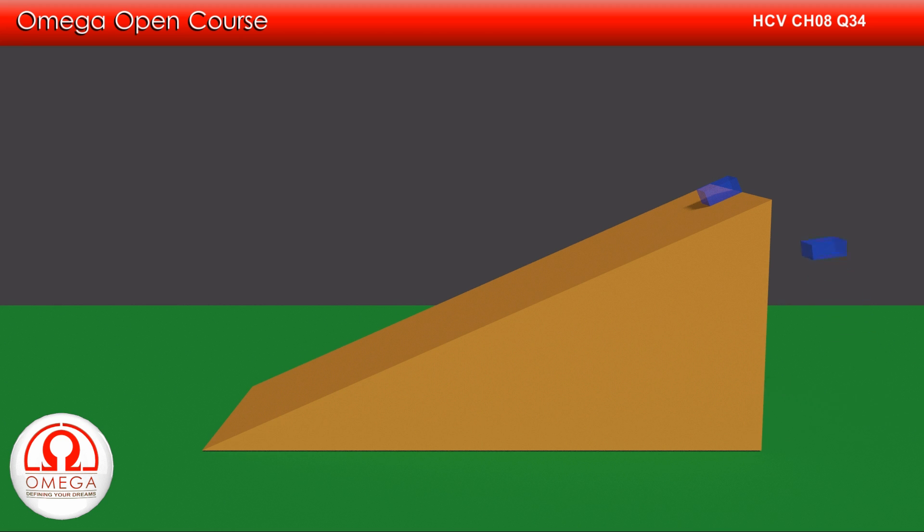When the block is lifted and put on the top of the incline at height h from the ground, its gravitational potential energy is mgh. As it is at rest, its kinetic energy is still zero. So the total increase in the mechanical energy of the system is mgh. Therefore, work equal to mgh must have been done on the system.